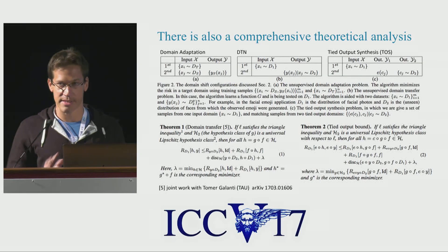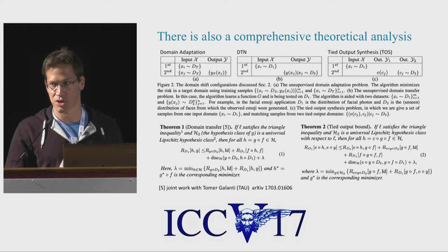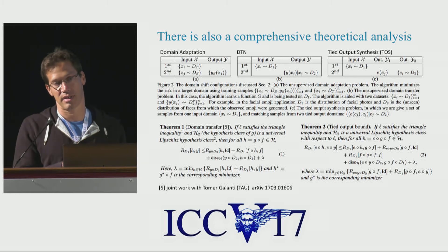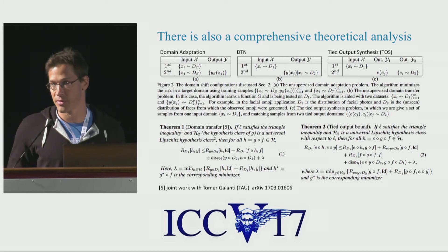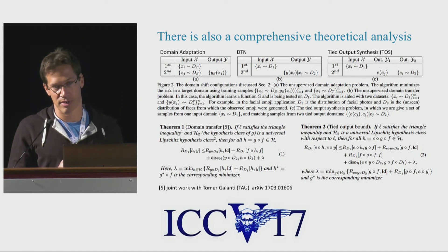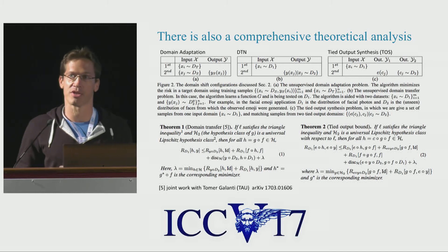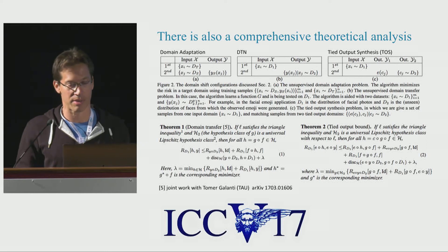I described the system through its loss, but we also have a comprehensive theoretical analysis in the paper. For example, we are able to show that the tied output synthesis problem generates both the image and the configuration vector — this is why we call it tied output. It is a combination of unsupervised domain adaptation and the domain transfer network. We also show that our loss is well grounded in that if we derive a generalization bound, the terms in the loss closely match the terms in the generalization bound.